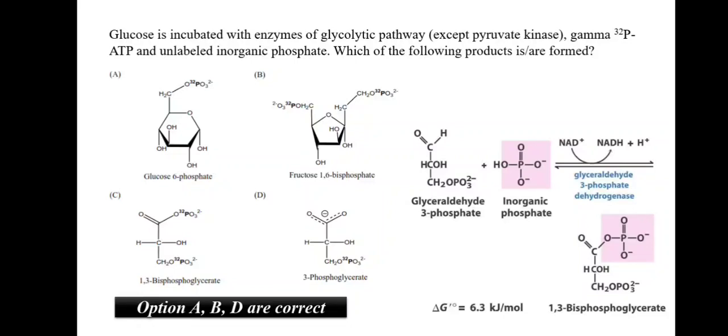So, when we look at all the four structures, we can see that all the four have phosphate group. But, when we look at the 1,3-bisphosphoglycerate closely, we know that glyceraldehyde-3-phosphate, in addition to an inorganic phosphate, becomes 1,3-bisphosphoglycerate. Thus, this inorganic phosphate addition will not be radiolabeled. Thus, our 1,3-bisphosphoglycerate will not be radioactive and only A, B, D will be formed.